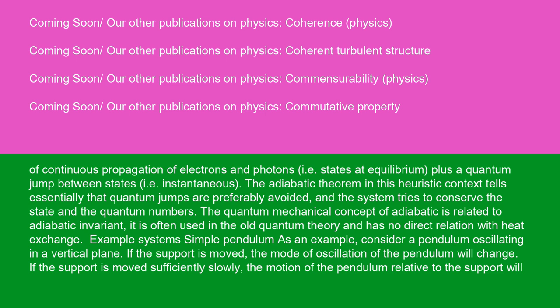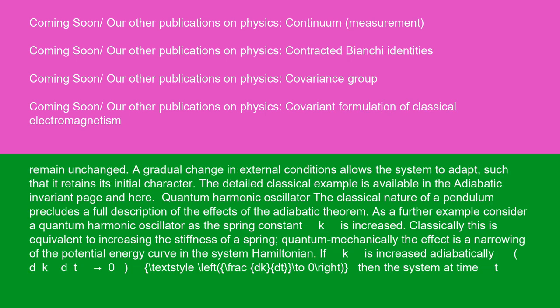Example system — simple pendulum: consider a pendulum oscillating in a vertical plane. If the support is moved sufficiently slowly, the motion of the pendulum relative to the support will remain unchanged. A gradual change in external conditions allows the system to adapt such that it retains its initial character. The detailed classical example is available on the adiabatic invariant page.